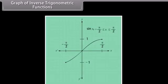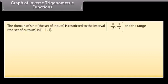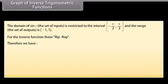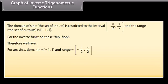In this screen, we will learn about the graphs of the inverse trigonometric functions. Using this figure, the graph of arc sin x or sin⁻¹ x can be easily obtained. The domain of sin x is restricted to the interval (−π/2, π/2) and the range is (−1, 1). For the inverse function, these flip-flop. Therefore, for arc sin x: domain = [−1, 1] and range = [−π/2, π/2].